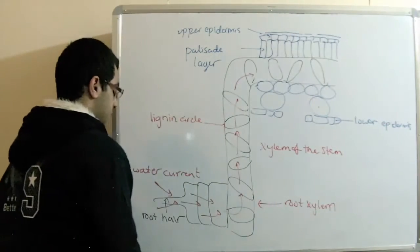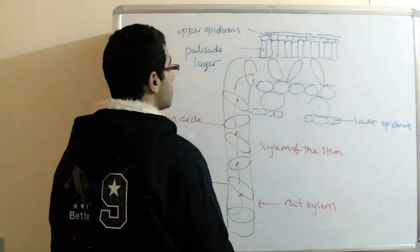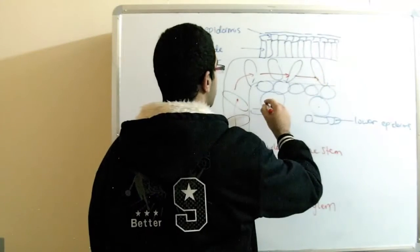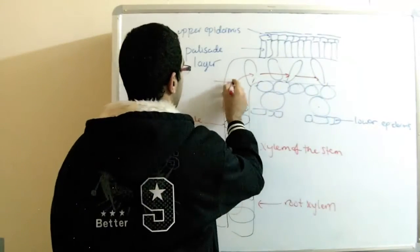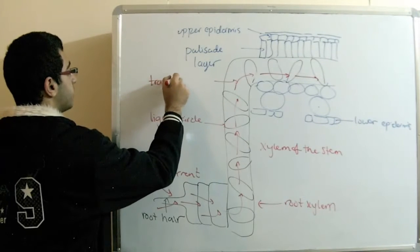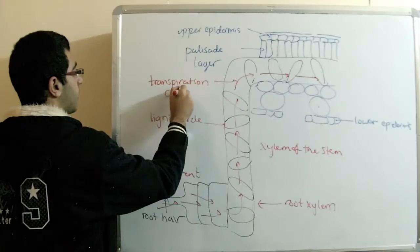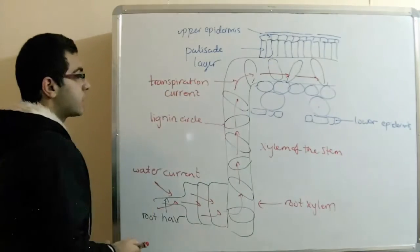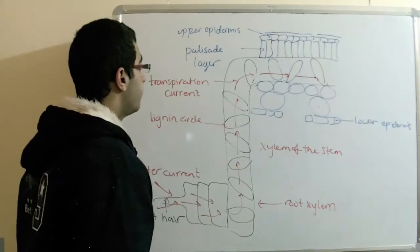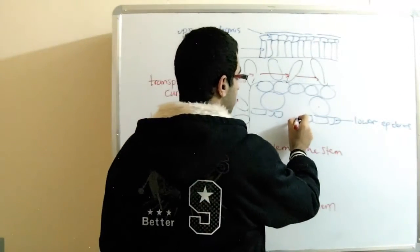So what happens is when the water reaches here, we get a current which is called the transpiration current. This current is called so because this water, which flows in this pathway, is transpired through the stoma.